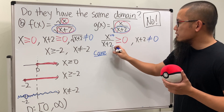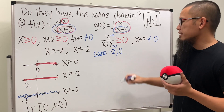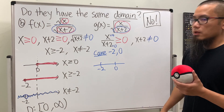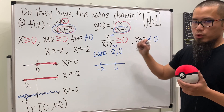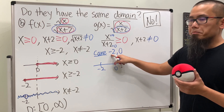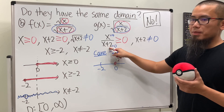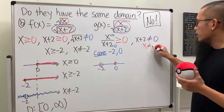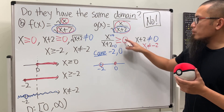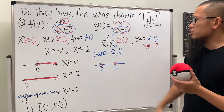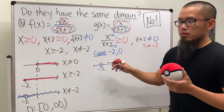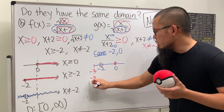Mark negative two and zero on a number line. We can include zero (closed circle) but cannot have negative two since it's in the denominator (open circle). Test a number less than negative two, say negative three: negative three over negative one is positive — correct, so take that piece. Test a number between negative two and zero, say negative one: negative over positive is negative — no good.